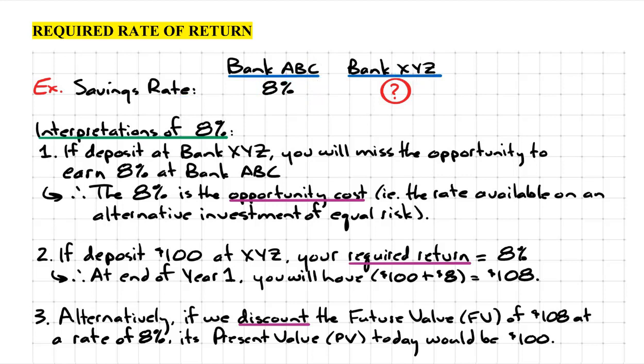What we want to do for this LOS is interpret this 8%. So the first interpretation is as follows: if we deposit at Bank XYZ, you will miss the opportunity to earn 8% at Bank ABC.